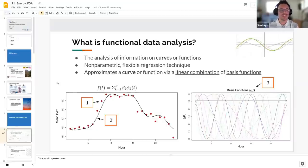And FDA is, that's the acronym, FDA Functional Data Analysis. It's an analysis of information on curves and functions. For our purposes today, we're going to highlight curves. But if you work in, let's say, with spatial data, you can use functions as well. Functional data analysis is essentially a nonparametric flexible regression technique that is used to approximate a curve.